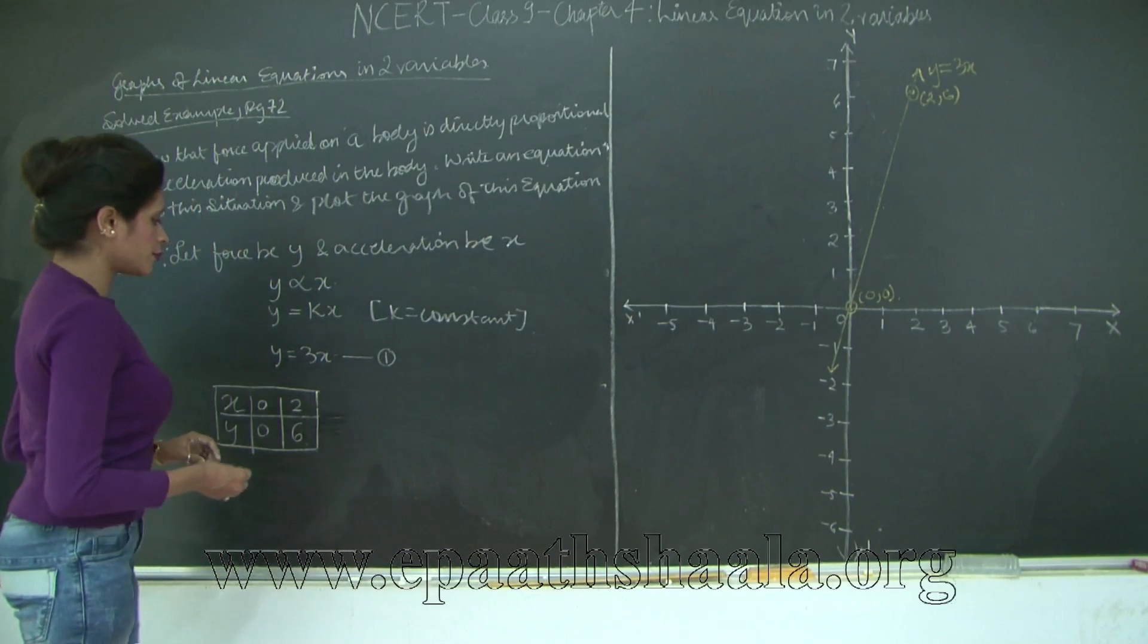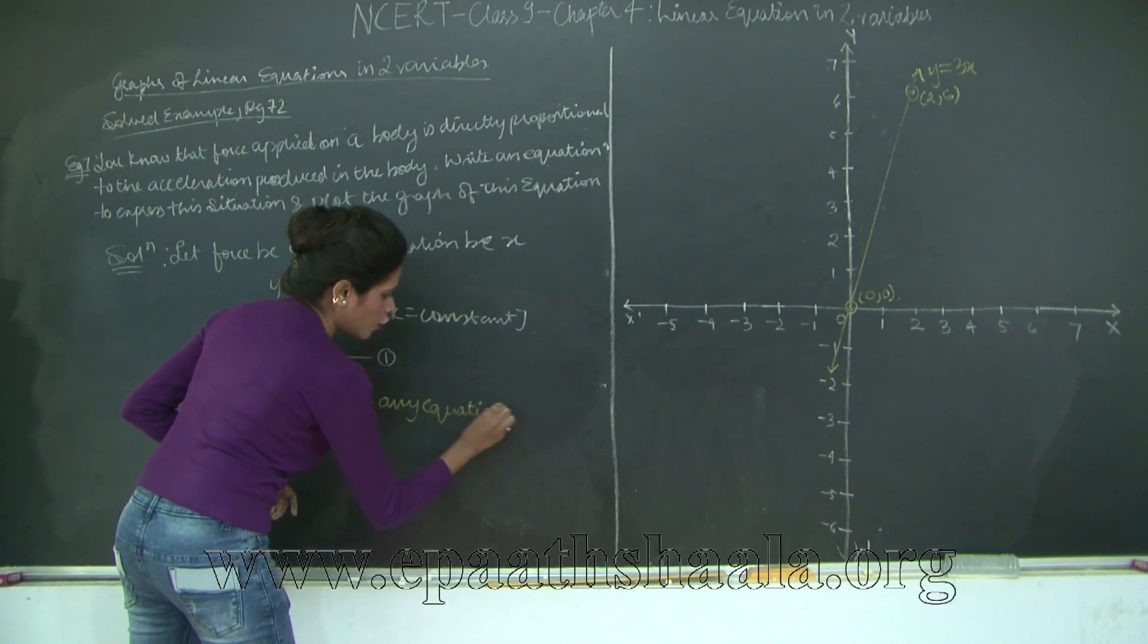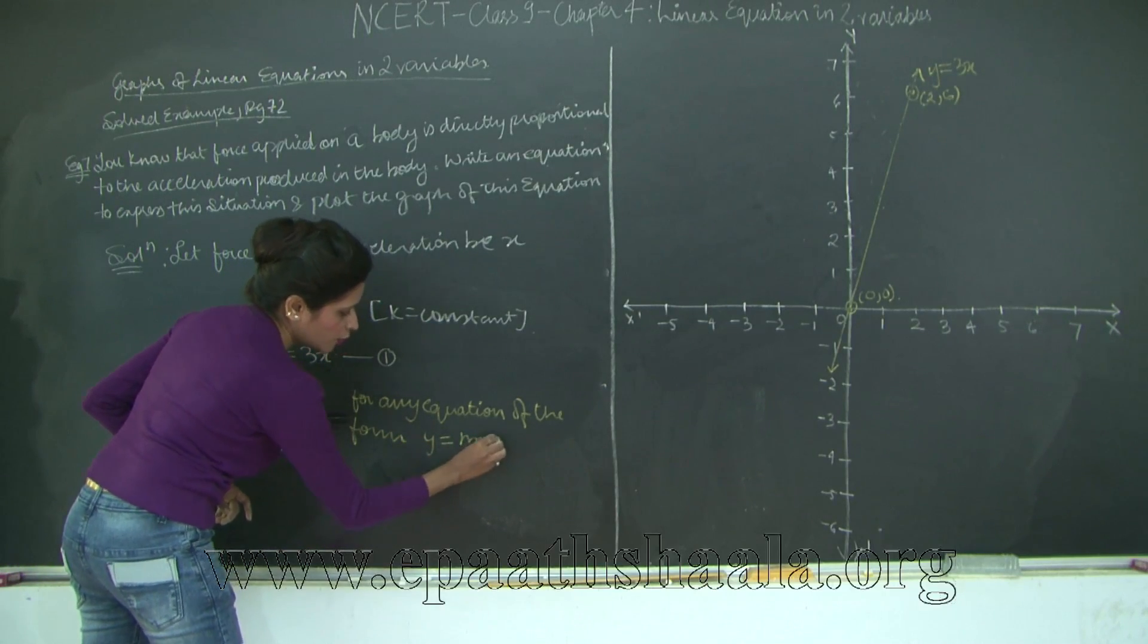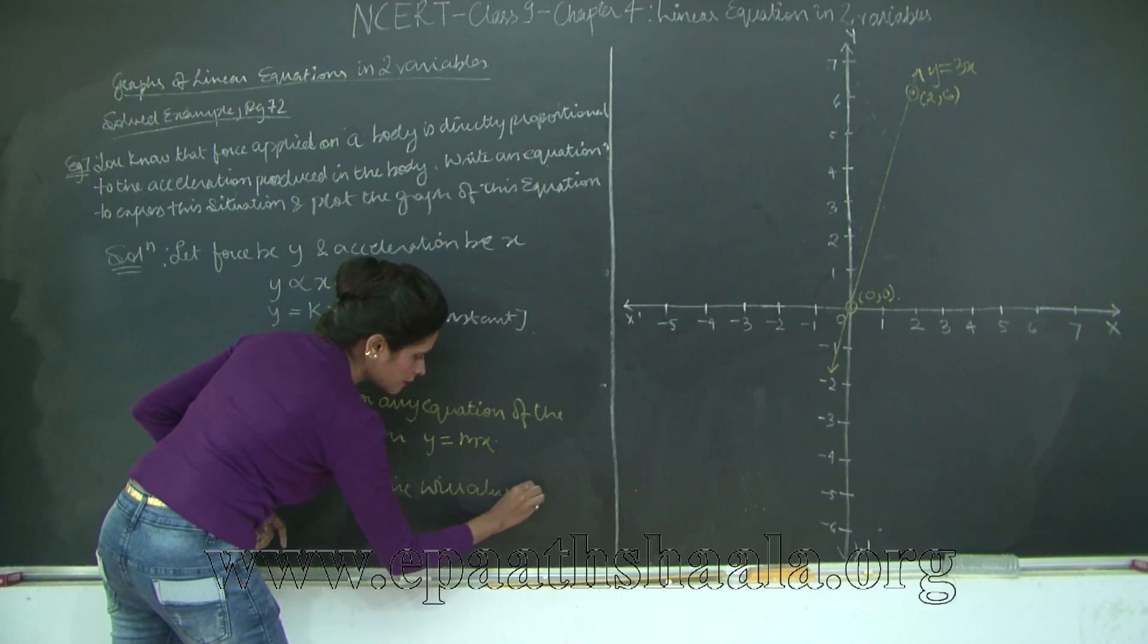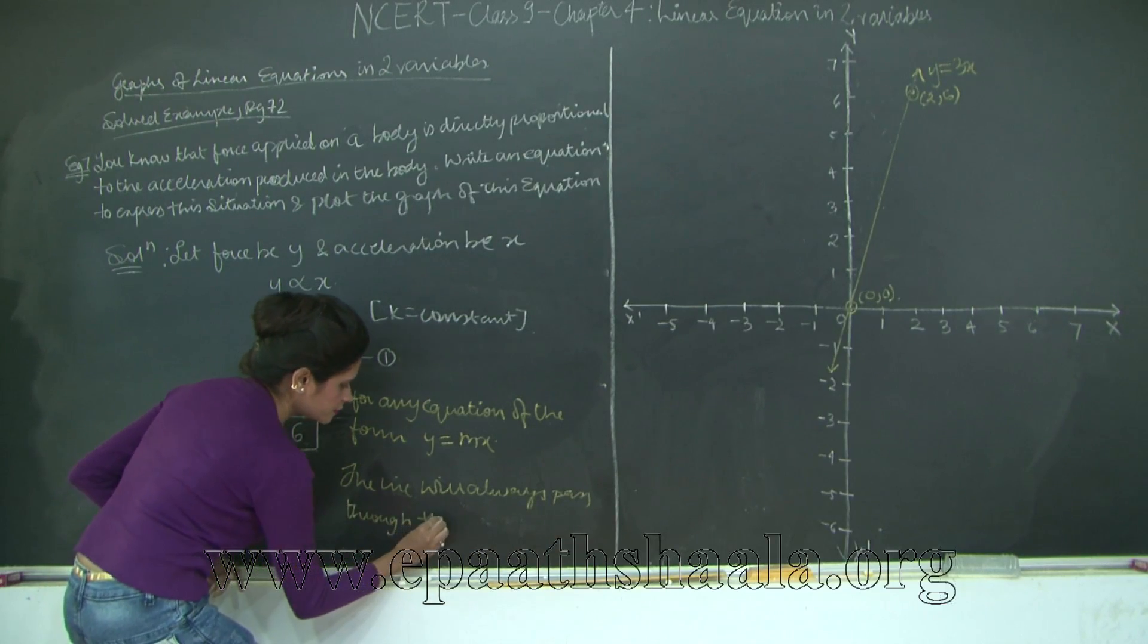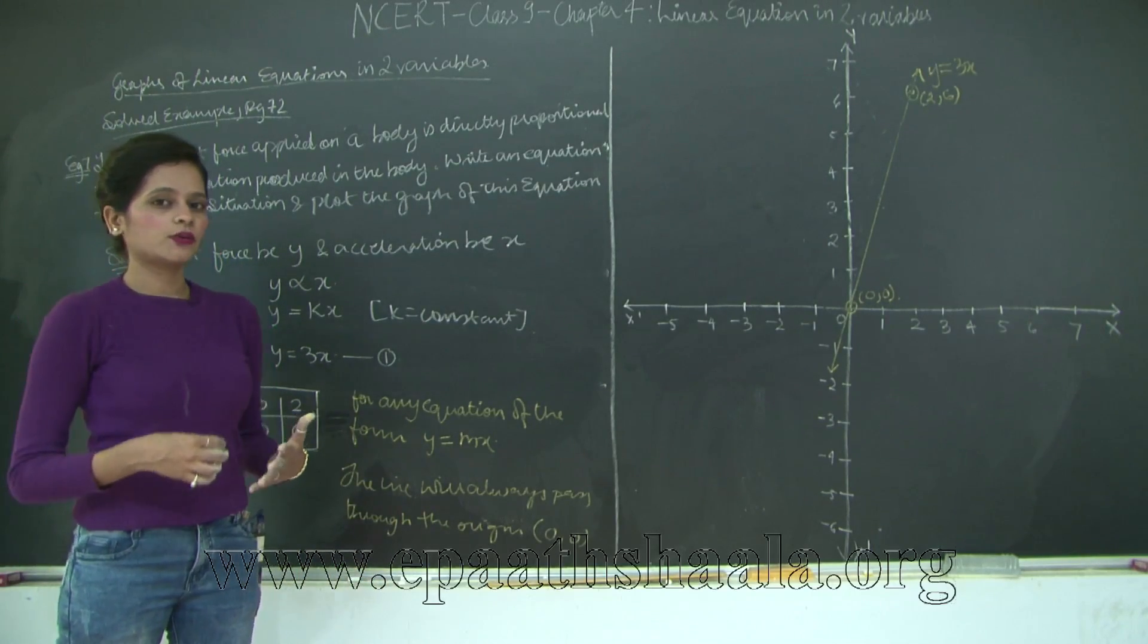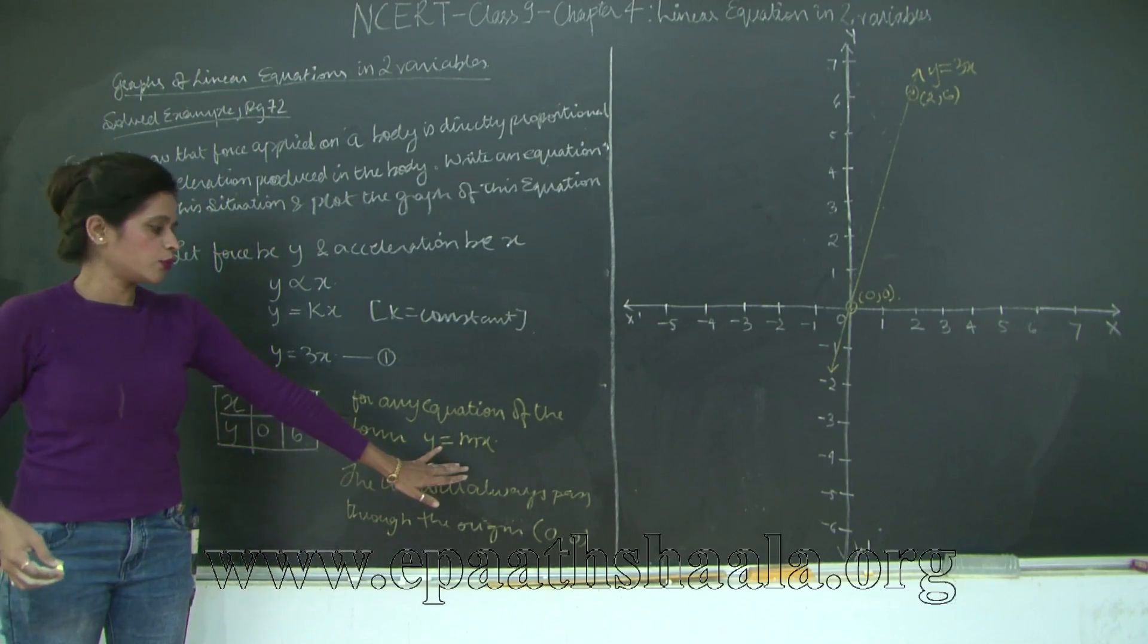Also one very important point that you need to remember is for any equation of the form y is equal to mx where m is your constant, the line will always pass through the origin which is nothing but (0, 0). So if you get any such type of question in your exam to draw graph of any equation passing through the origin and also give an example of such equation, you can always give it in the form y is equal to mx where you could substitute m with any constant.